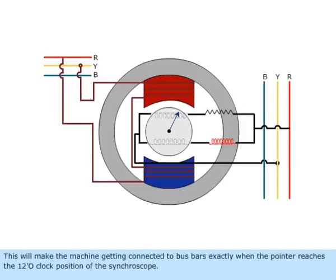This will make the machine getting connected to busbars exactly when the pointer reaches the 12 o'clock position of the synchroscope.